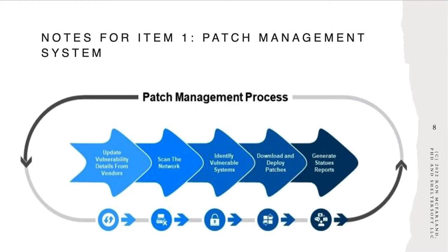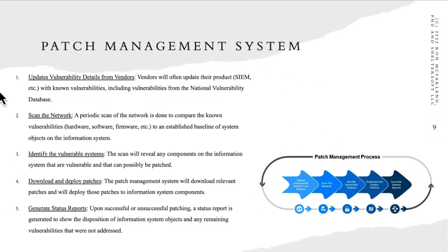Let's walk through the patch management process. First, vendors update their product — like a SIEM — with known vulnerabilities, including those from the National Vulnerability Database, as well as their own known vulnerabilities not yet documented in the NVD. Next, scan the network: a periodic scan compares known vulnerabilities in hardware, software, and firmware to an established baseline of system objects. Tools like Manage Engine or Cisco tools can create a baseline portfolio of your system objects and their patch level.